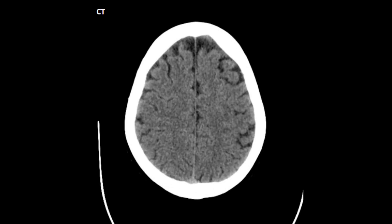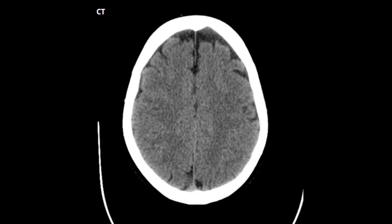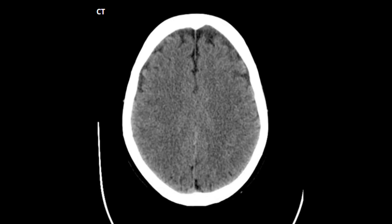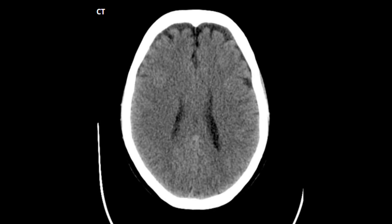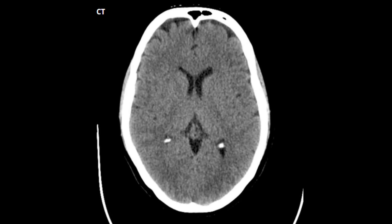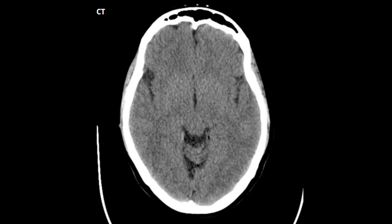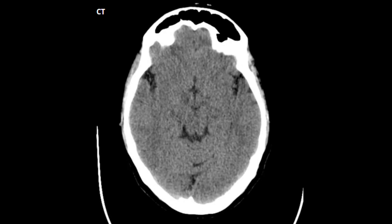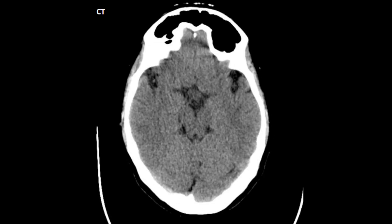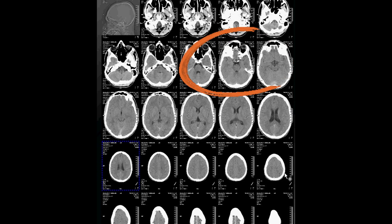As I told you in the previous video, when we scroll down towards the base of the brain, we see multiple deep CSF-filled spaces which are known as cisterns. Some of them were discussed in the previous video. On a CT film, these slices are usually used to visualize the cisterns.